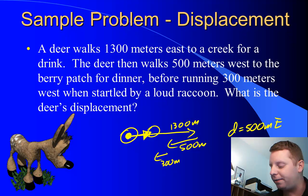Everything else in between doesn't matter for displacement. Now, because displacement is a vector, it has to have a direction, so 500 meters east.